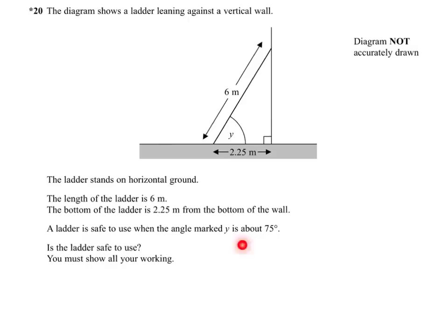A ladder is safe to use when the angle is about 75 degrees. So is the ladder safe? We're going to need to work out the size of this angle, see if it's close to 75, and make a statement.